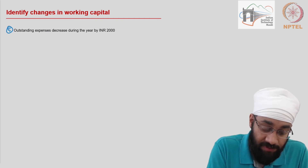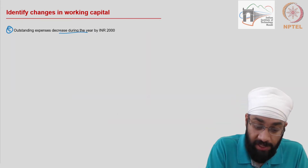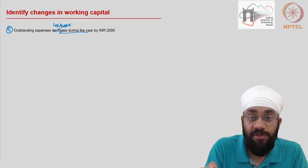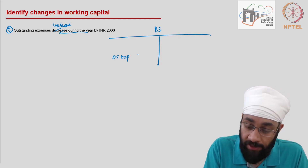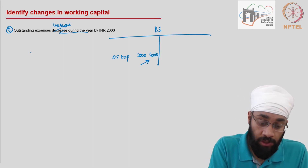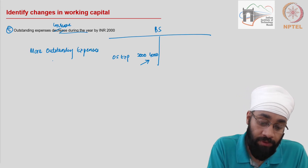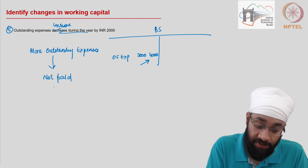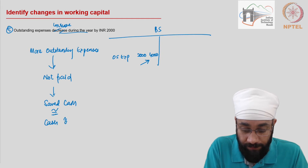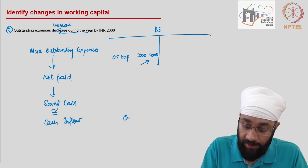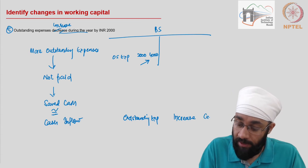For outstanding expenses: in the balance sheet under current liabilities, outstanding expenses are increasing from 2,000 to 4,000. When there are more outstanding expenses, it means you did not pay but you received the benefit. Not paying means you have saved the cash, which is equivalent to a cash inflow. The learning: whenever outstanding expenses — a current liability — increase, it results in a cash inflow.